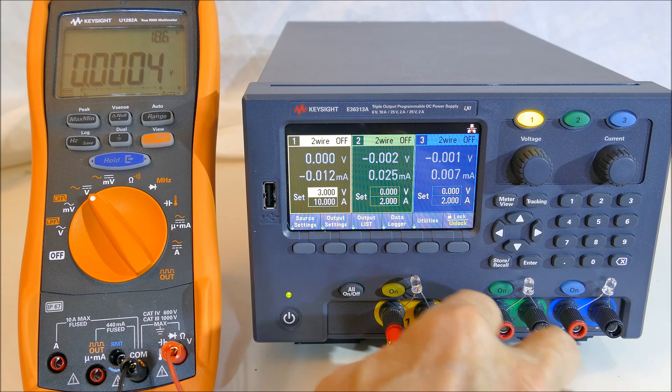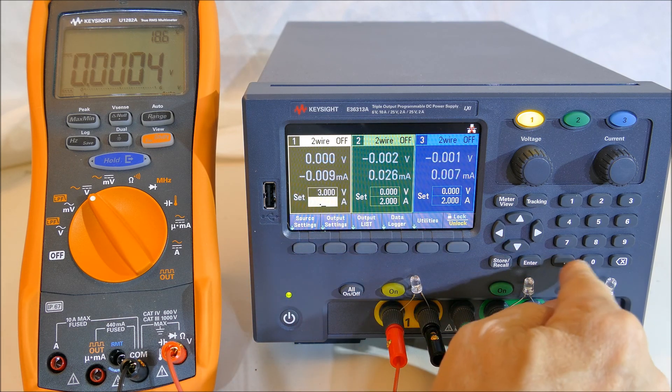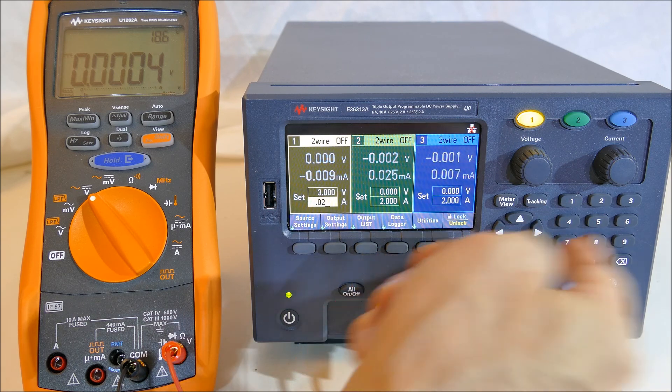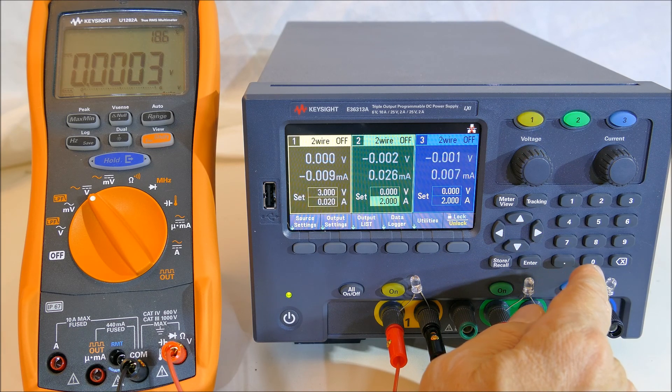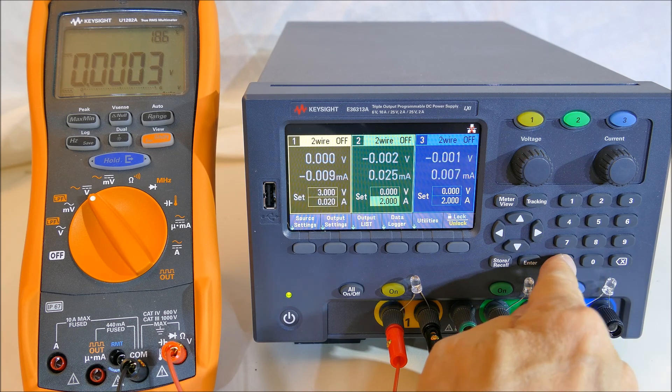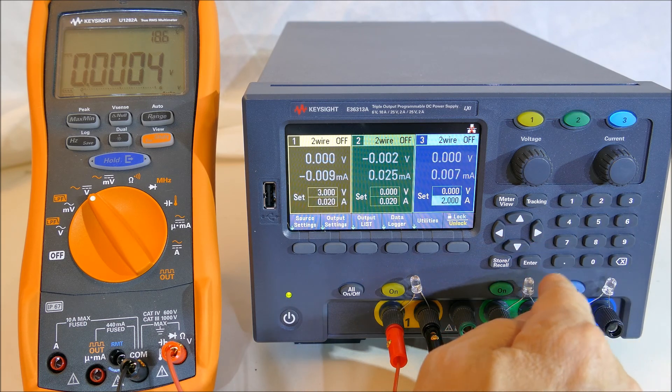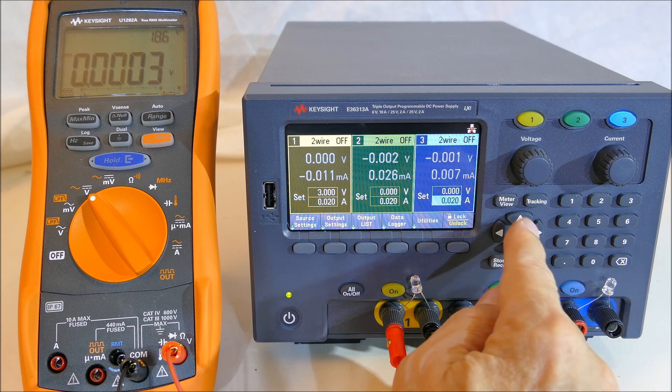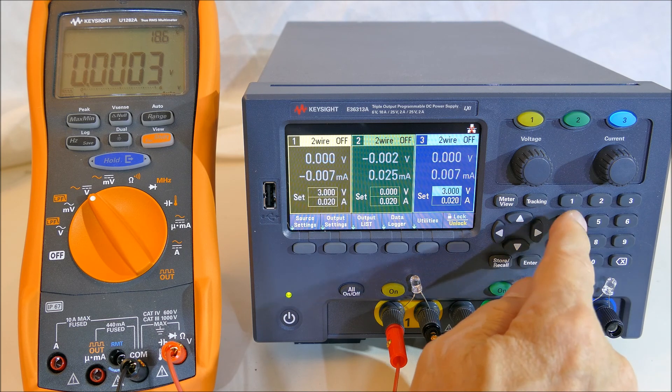These are white LEDs. I'm going to set the current to 20 milliamps, 0.02 amps. We can go and do the next one, which is 0.02, and the next one, and the voltage 3 all across the board.